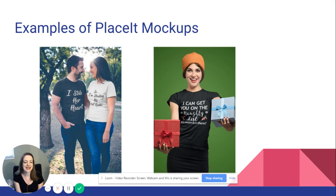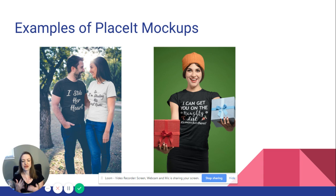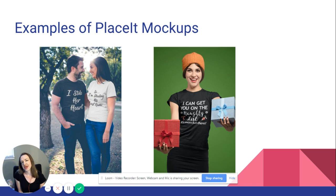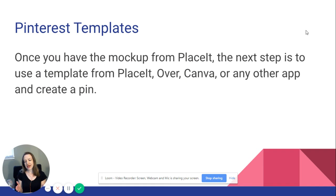These are a couple of examples I made using Placeit so you can get an idea of what the models look like and what options you have. The one on the left was for engagement t-shirts — it's nice because someone who sees this pin can picture themselves wearing it for engagement photos. The one on the right is for holiday designs. It's nice to have a holiday mockup that matches the shirt, so for this Christmas design I picked a mockup with a person surrounded by presents and Christmas colors.